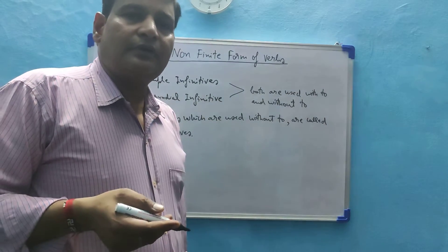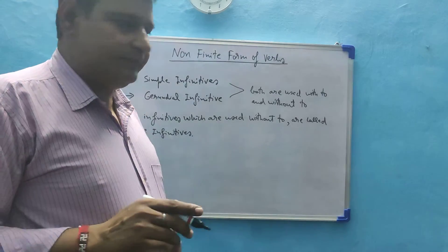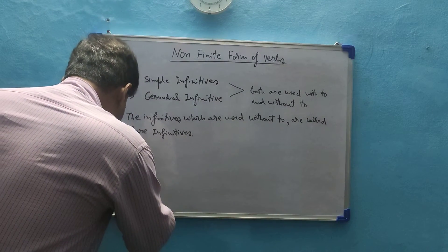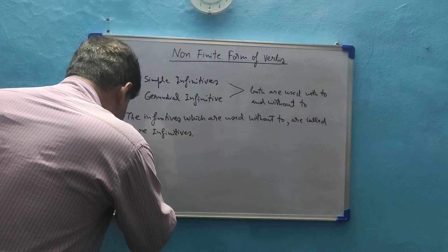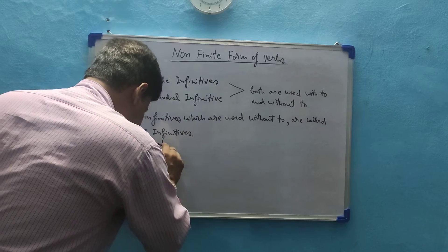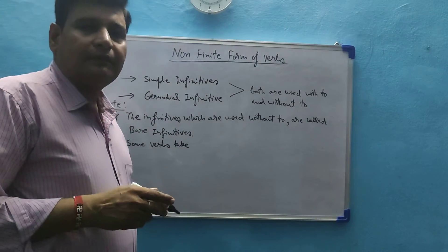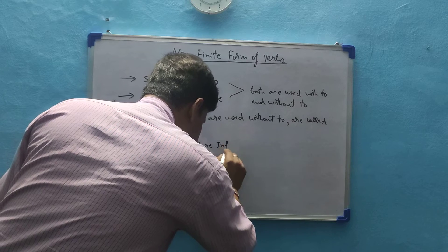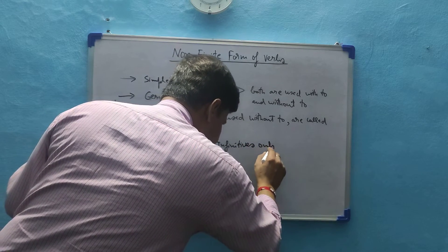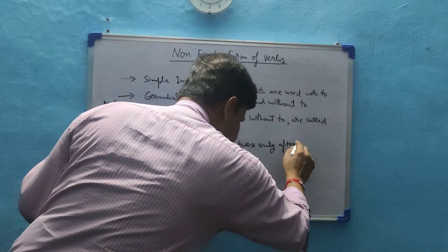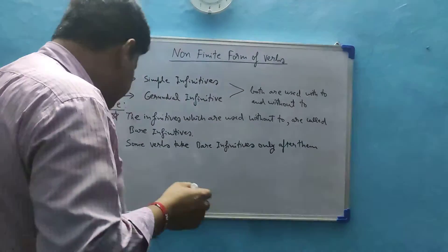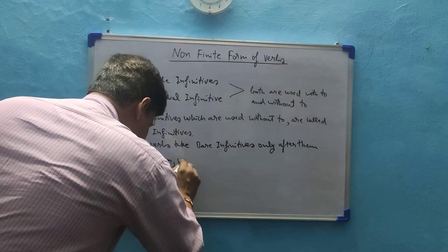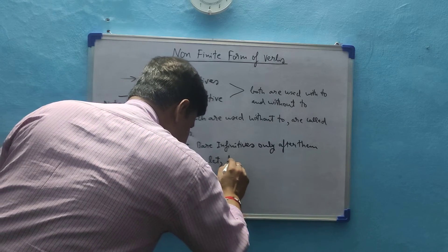Infinitives are of two types: simple infinitives and gerundial infinitives. Both types are used with 'to' and without 'to'.